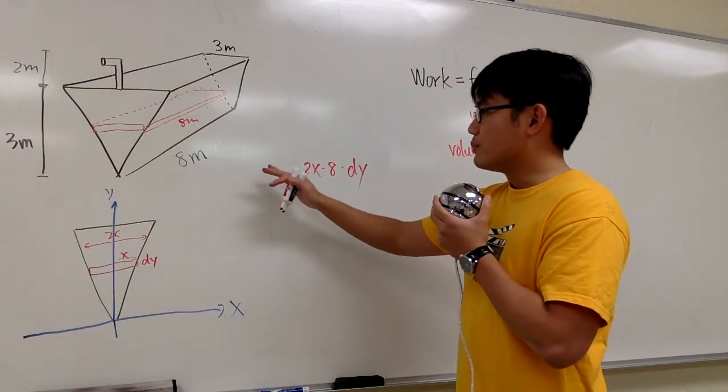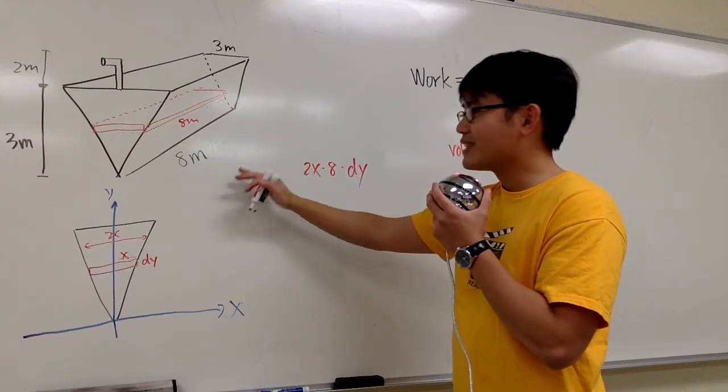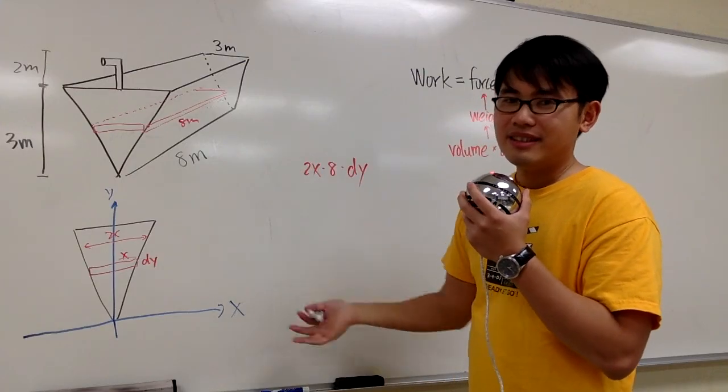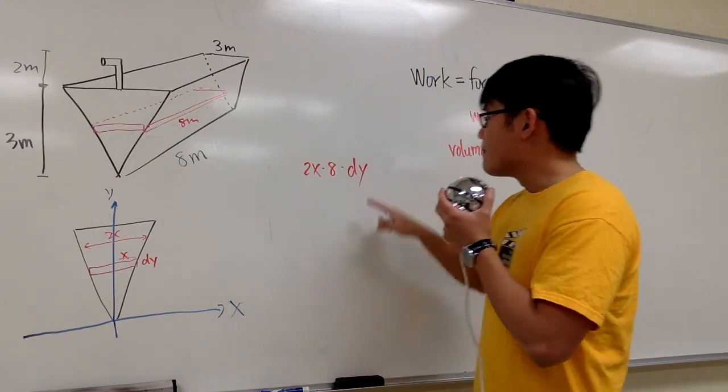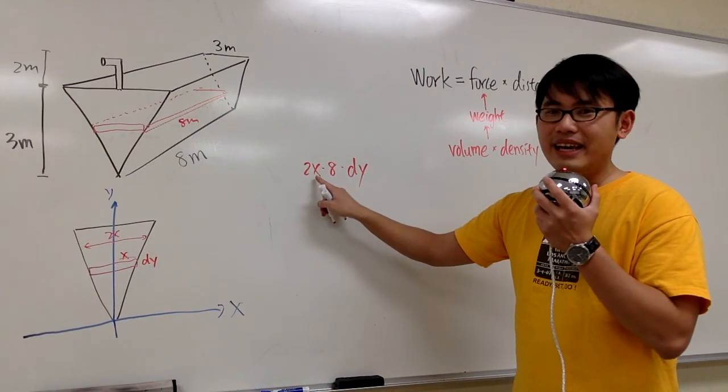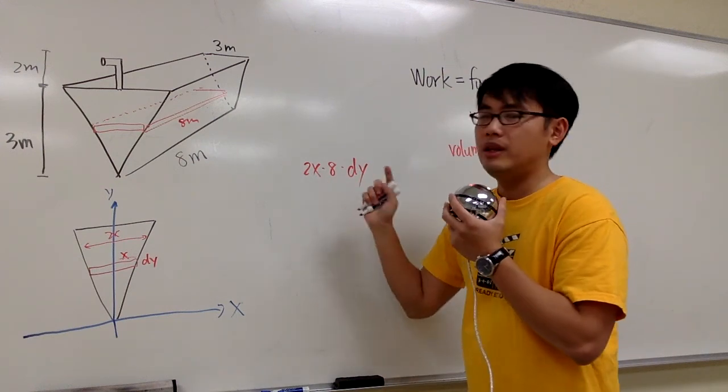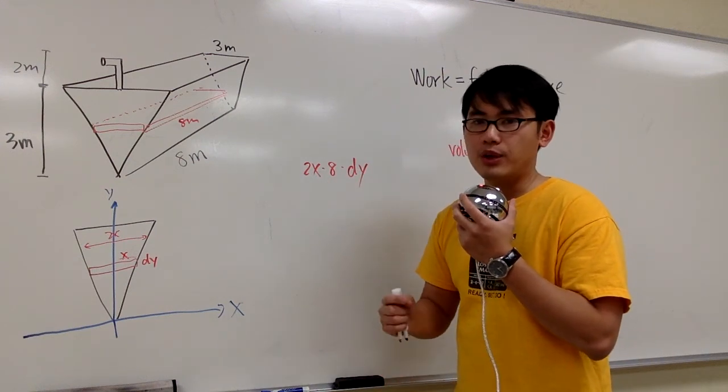And then we can just multiply by 1,000, and then 9.8, and then the distance, things like that. However, because we're using dy here, and then here we have 2x, the x is not in the y world. So we must have a connection between the x and the y. And this is how we can do it.